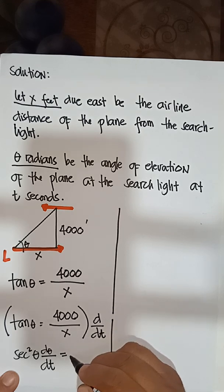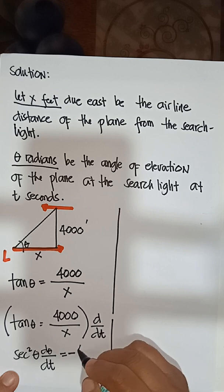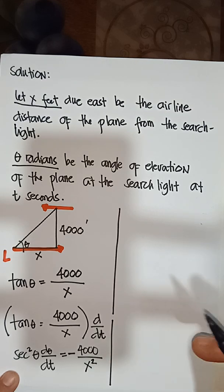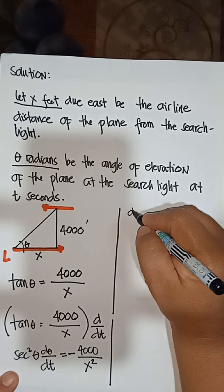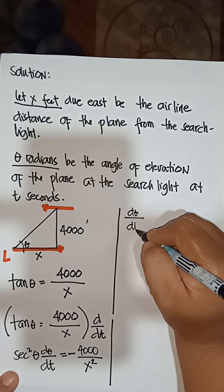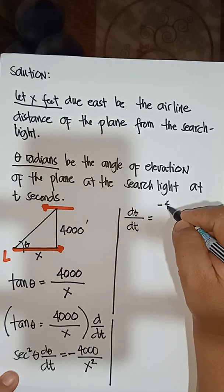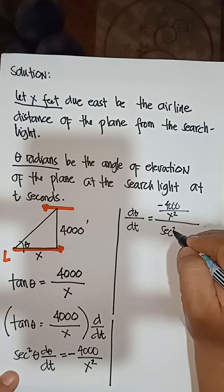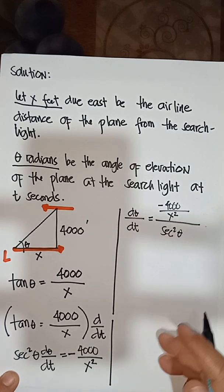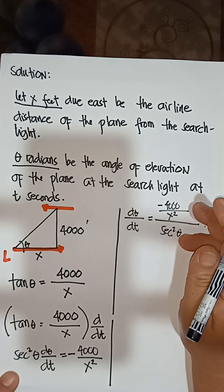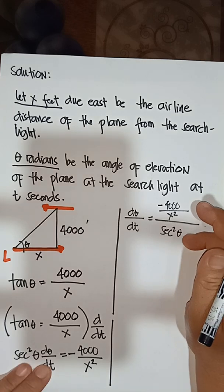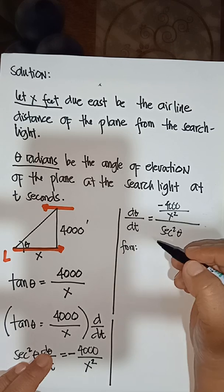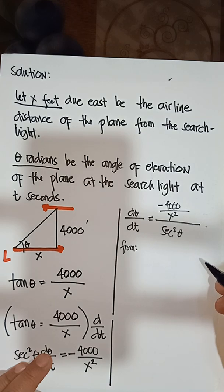The derivative of tan θ is sec²θ · dθ/dt. The right side is the derivative of a constant over a variable, which equals negative 4,000 over x² times dx/dt. Therefore, d theta over dt equals negative 4,000 over x squared, divided by sec²θ.